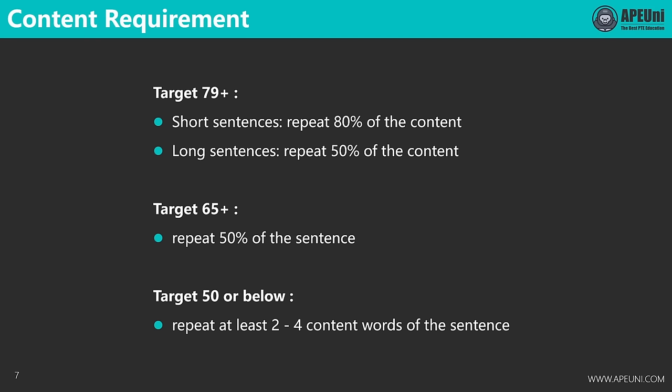Let's look at content requirements for different target scores. For a target of 79 or above, try to repeat at least 80% for short sentences and at least 50% for longer sentences. For a target of 65 or above, repeating 50% of the sentence is sufficient. For a target of 50 or below, try to repeat at least 2 to 4 content words per sentence in a clear and fluent manner. Content words are meaningful words like nouns, verbs, adjectives, or adverbs — prepositions like to, on, of, and for are not counted.